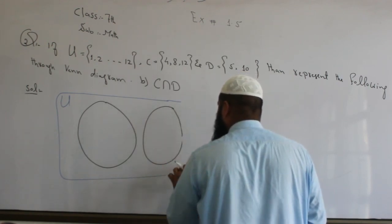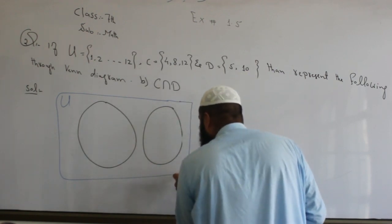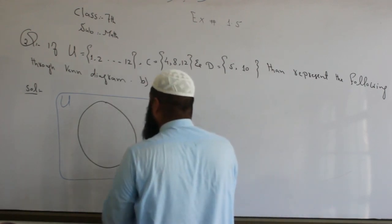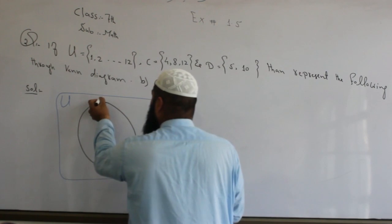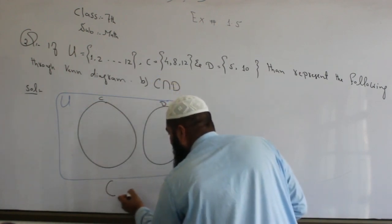Set C has members and set D has members. Since these are disjoint sets, they have no common element. So C intersection D...